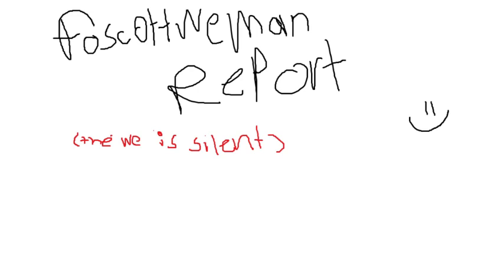What if you just take the wings of an airplane and super glue them to the sides, then duct tape some rocket fuel to the back? Also, the Germans actually did something like that before. Getting into World War II facts will make this a much longer podcast. Here at the Foe Scottman Report — where the 'we' is silent — we don't get political on this podcast.